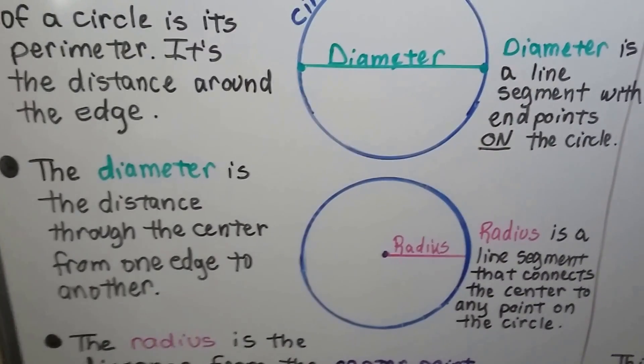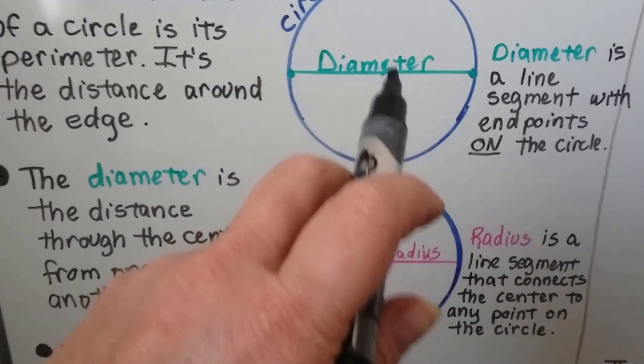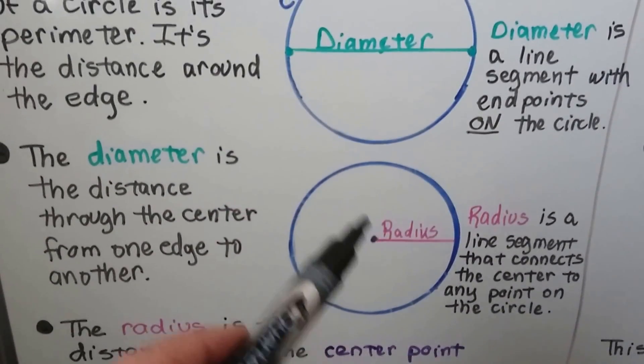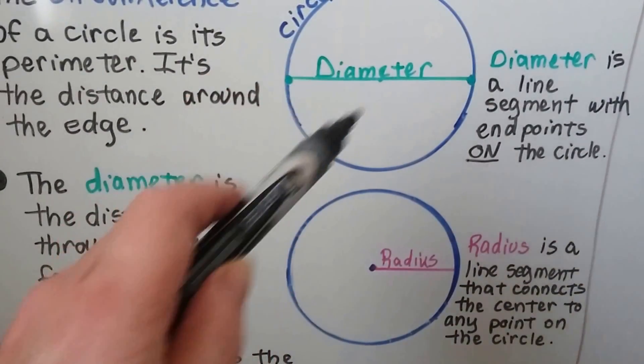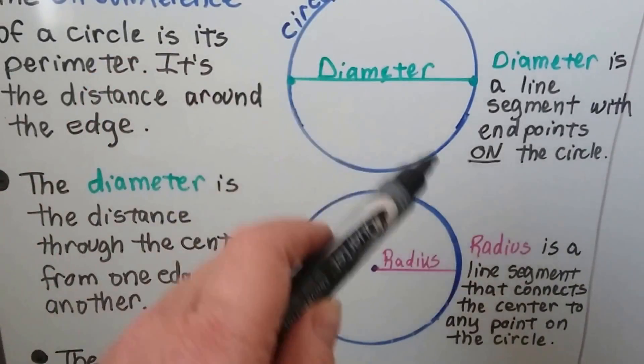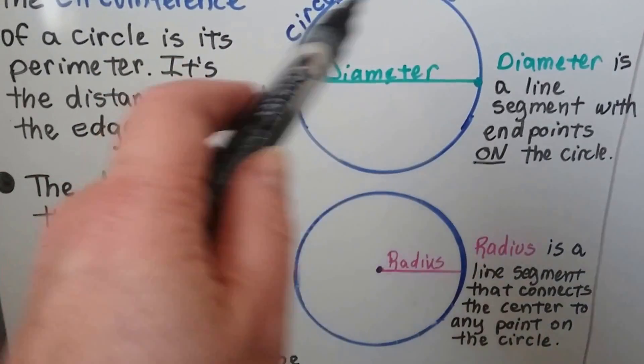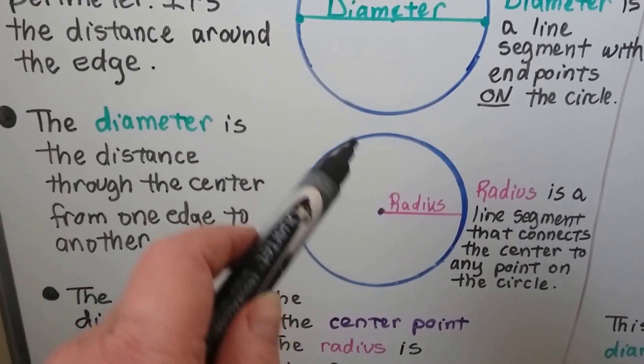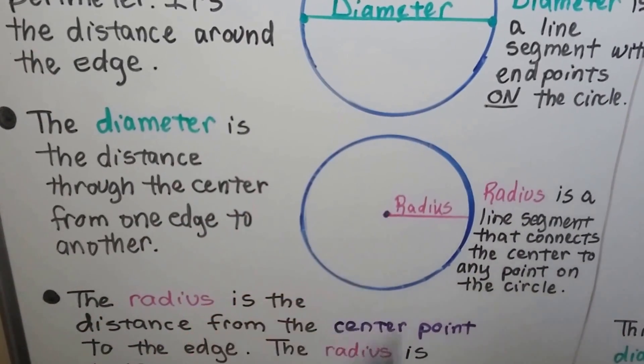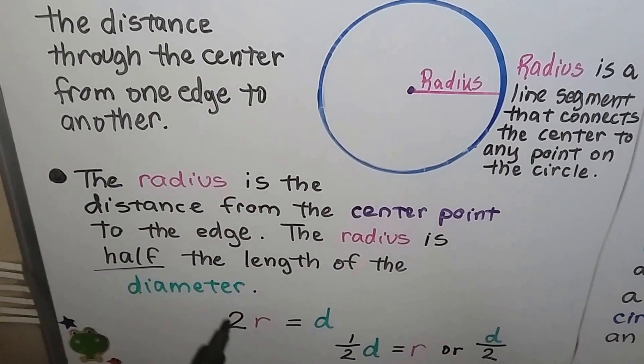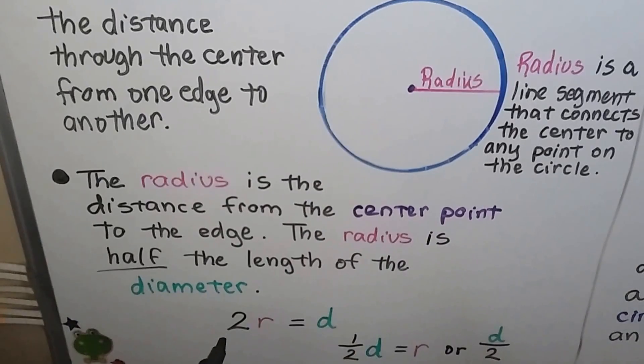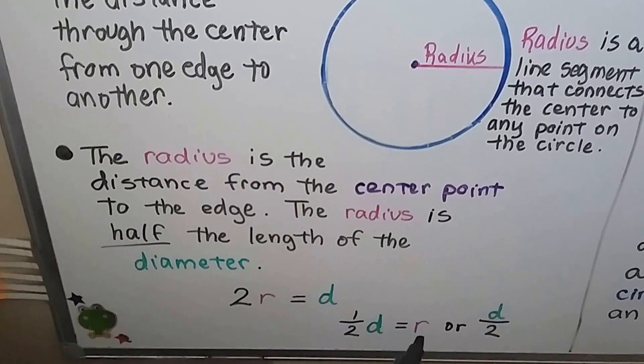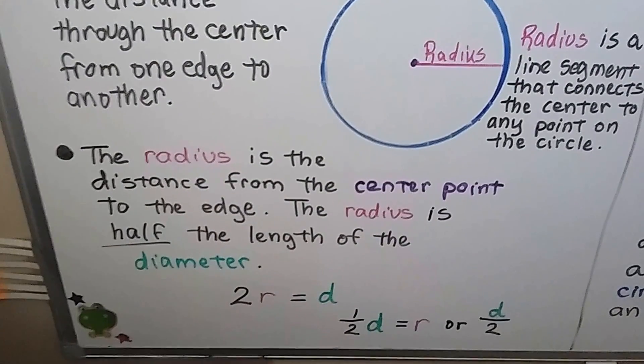It's half of that length, and it's a line segment that connects the center to any point on the circle. So the diameter can go in any direction as long as it's going through that center point. It doesn't matter. It's still the diameter, because the circle is the same distance all the way around from the center point. Same with the radius. It doesn't have to be going here. It could be going up this way. It could be going this way. So because two of these will equal the diameter, we could say two times the radius equals the diameter. We could also say half the diameter equals the radius, or the diameter divided by two equals the radius.